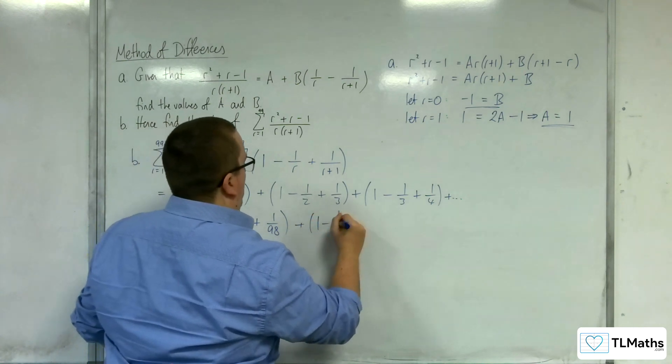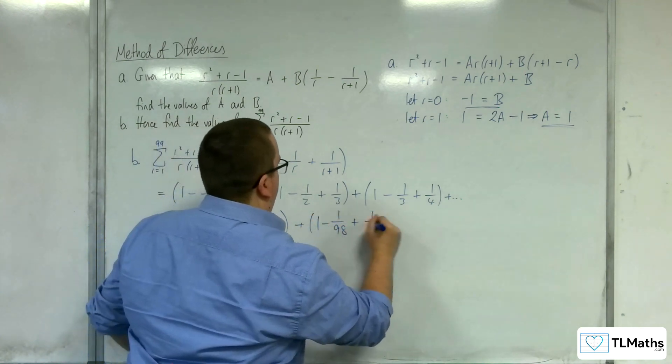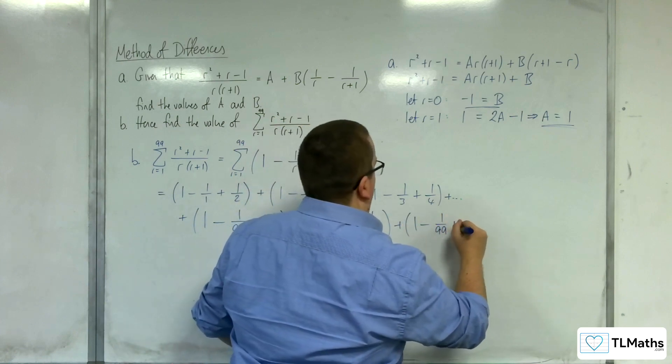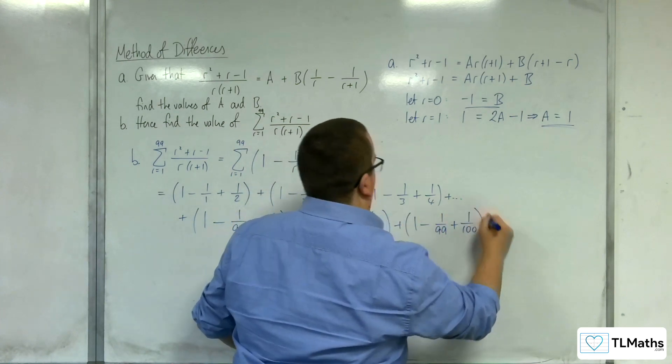Then we can have 1 take away 1 over 98 plus 1 over 99. And then finally, 1 take away 1 over 99 plus 1 over 100.